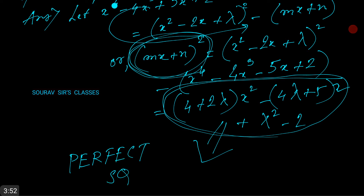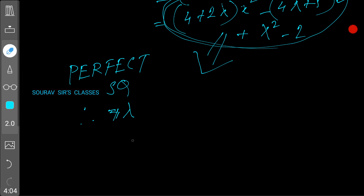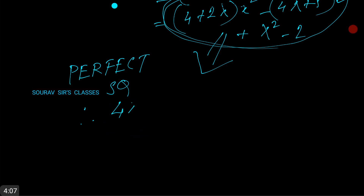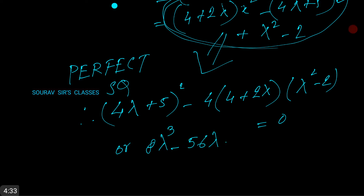Therefore, for this to be a perfect square, the discriminant must equal zero: (-4λ + 5)² - 4(4 + 2λ)(λ² - 2) = 0, which simplifies to 8λ³ - 56λ - 57 = 0.